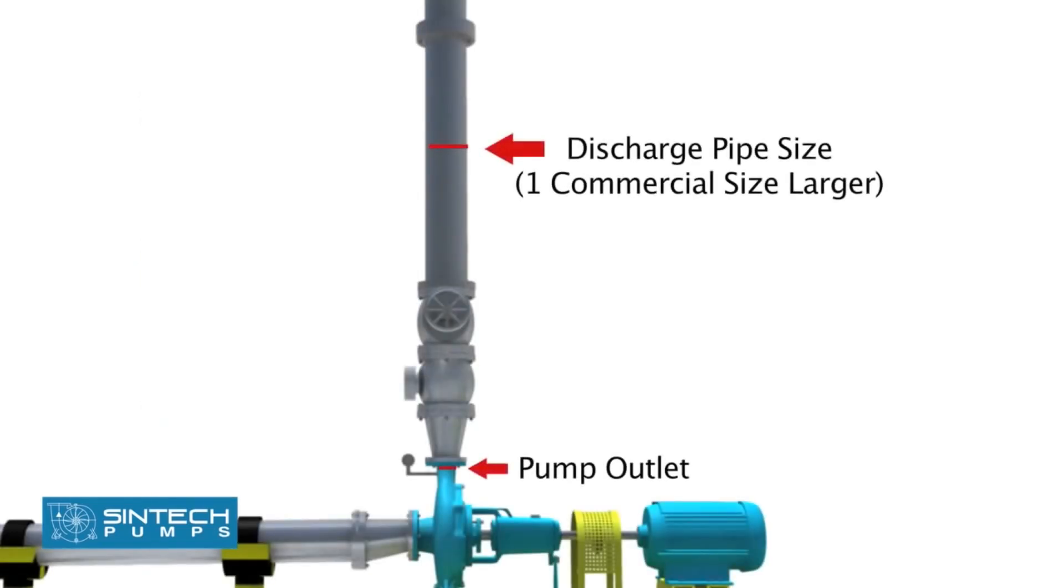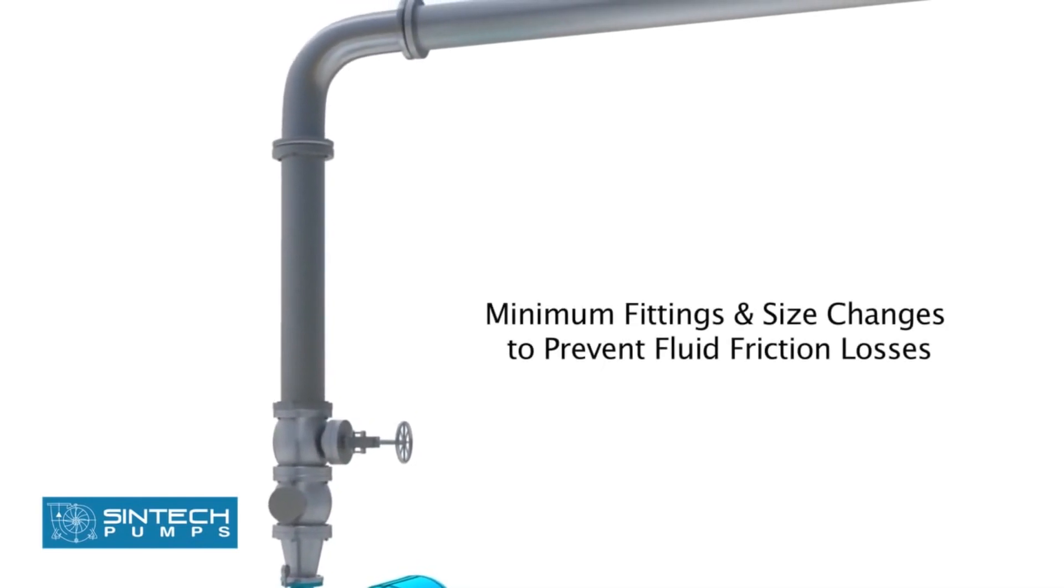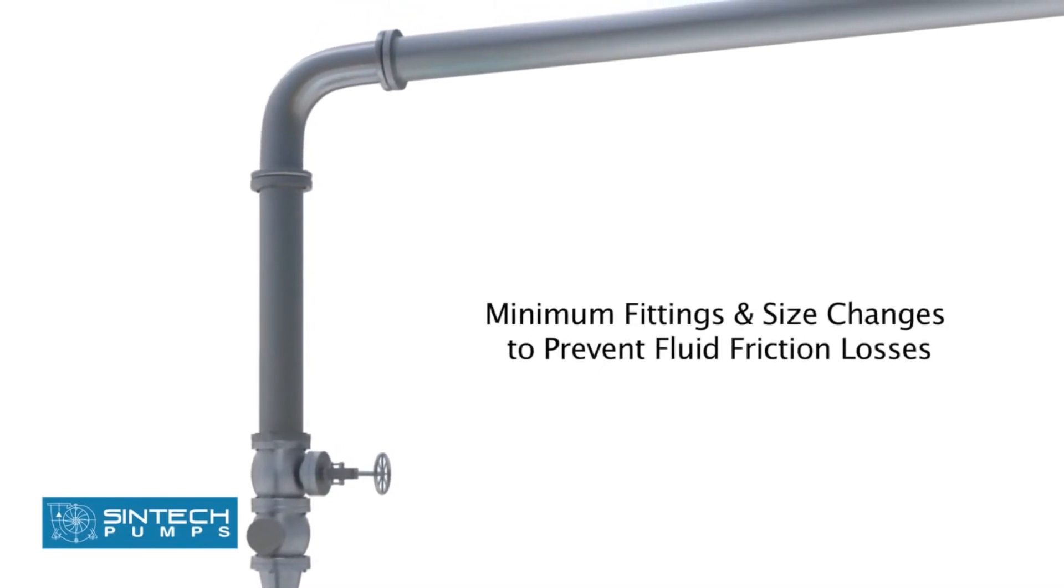Discharge pipe size should be at least one commercial size larger than the opening of the pump outlet. The number of fittings and size changes should be minimum to prevent fluid friction losses.